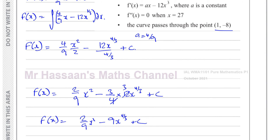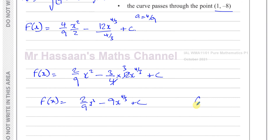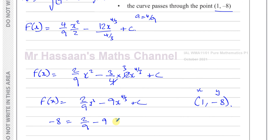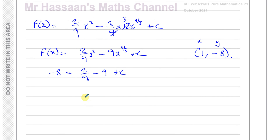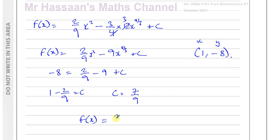To find f(x) properly we need the value of c. We know the curve passes through (1, -8), so x = 1 and y = -8. Substituting: negative 8 equals 2 over 9 times 1 squared minus 9 times 1 to the power 4 over 3 plus c. Since 1 to any power is 1, this gives negative 8 equals 2 over 9 minus 9 plus c. So c equals negative 8 plus 9 minus 2 over 9, which is 1 minus 2 over 9 equals 7 over 9.